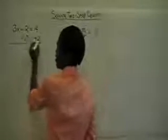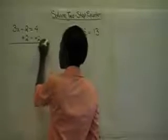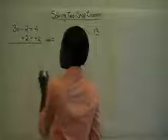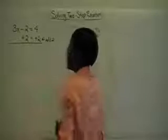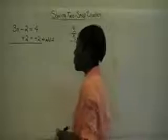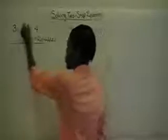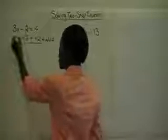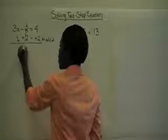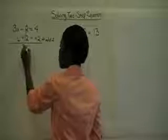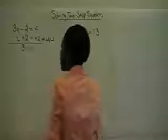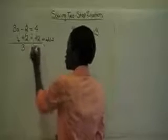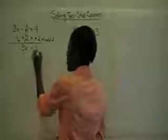When we add 2 on both sides, negative 2 plus 2 is 0. Therefore, we bring down 3x. I bring down my equal sign, and 4 plus 2 is 6. So now we have 3x equals 6.